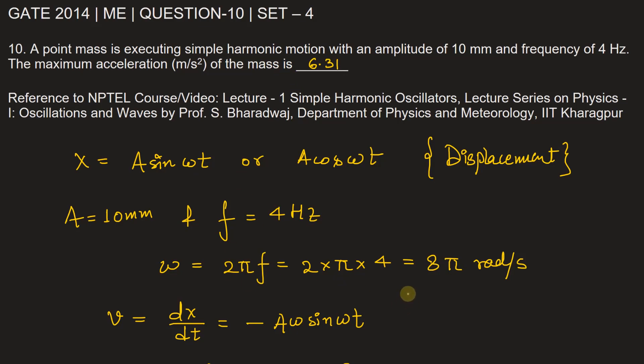Here we are assuming that x is equal to A cos omega t. You can get the same value even if you consider x equals A sin omega t. It doesn't matter.